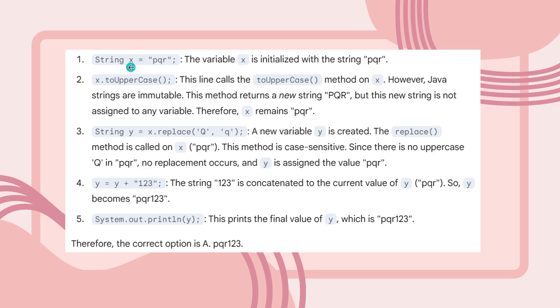Now let's see the explanation. First, they have given string x equals PQR. The variable x is initialized with the string PQR. When x.toUpperCase is called, this line calls the toUpperCase method on x. However, Java strings are immutable. This method returns a new string PQR, but the new string is not assigned to any variable. Therefore, x remains PQR.